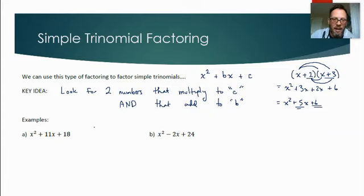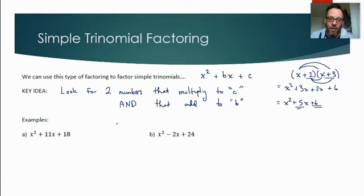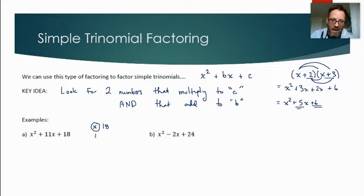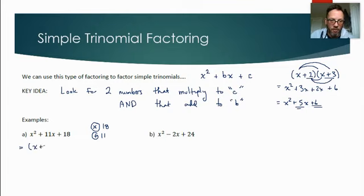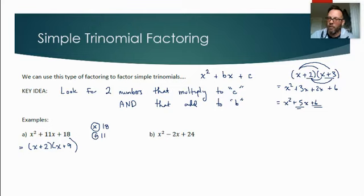My ideal scenario is that you can look at a simple trinomial and just write the factored form. The process: think about two numbers that multiply to 18 and add to 11 — those are 2 and 9 — giving (x + 2)(x + 9). That's it. Simple trinomials are simple to factor; you just play the sum-product game.